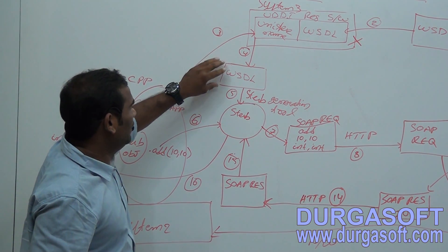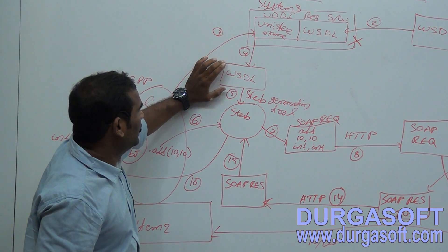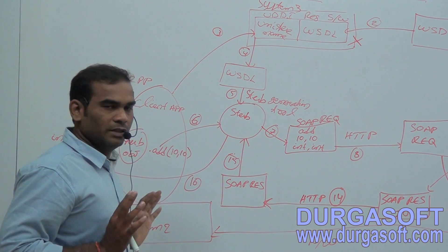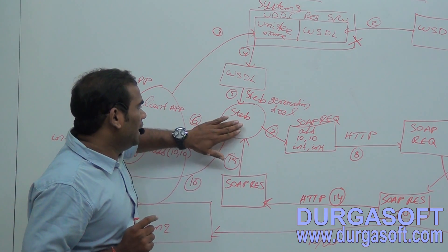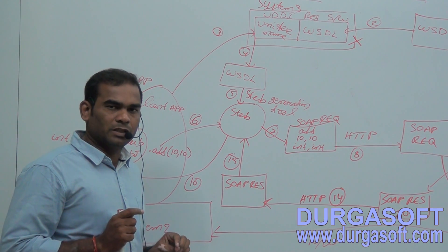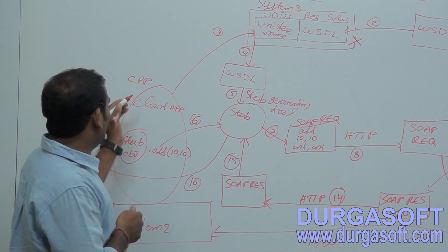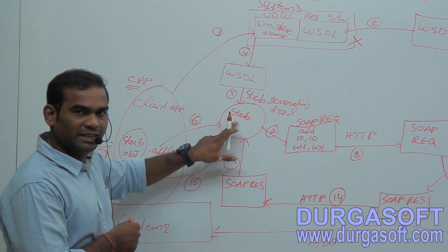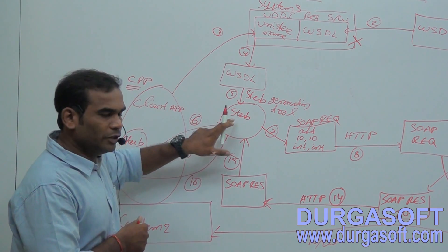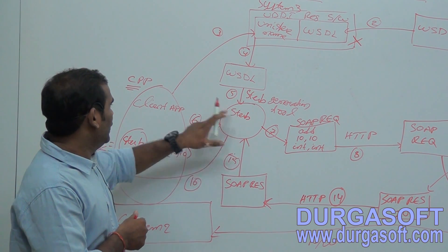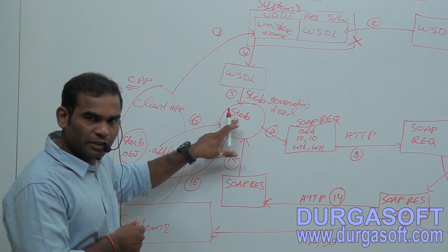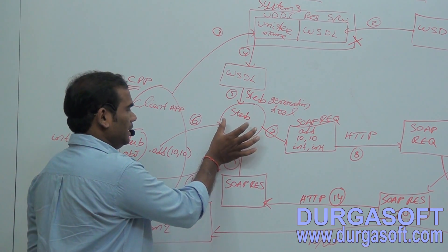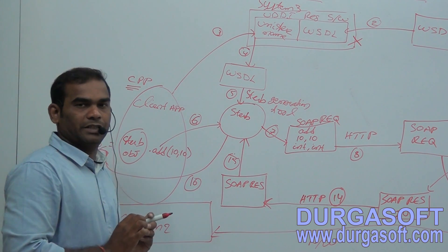Finally the client has the WSDL file. From this WSDL file, the client uses a stub generation tool to generate the stub. The behavior of the stub depends on the client application language: if the client application is C++, the stub will be a C++ class; if it is C#, the stub will be a C# class; and if it is Java, the stub will be a Java class. So the stub depends on the client application.